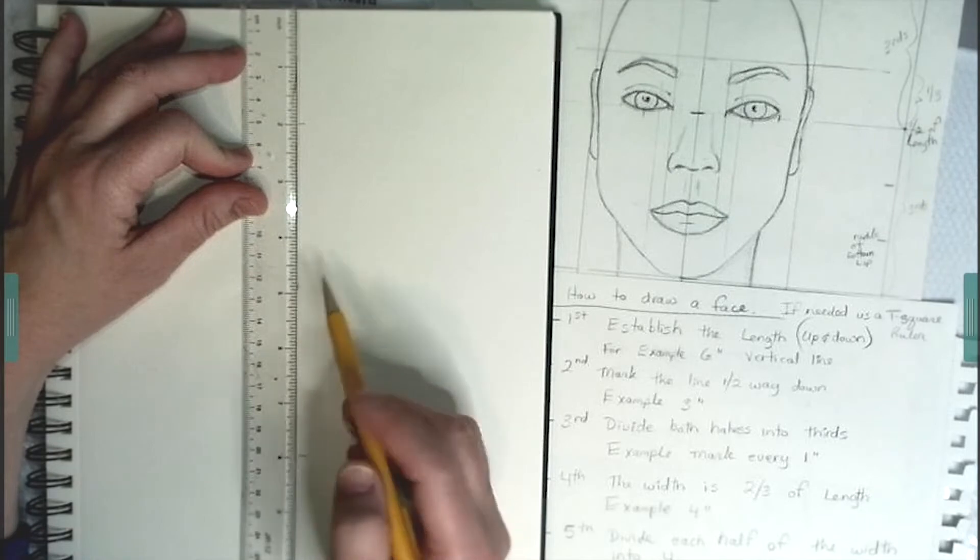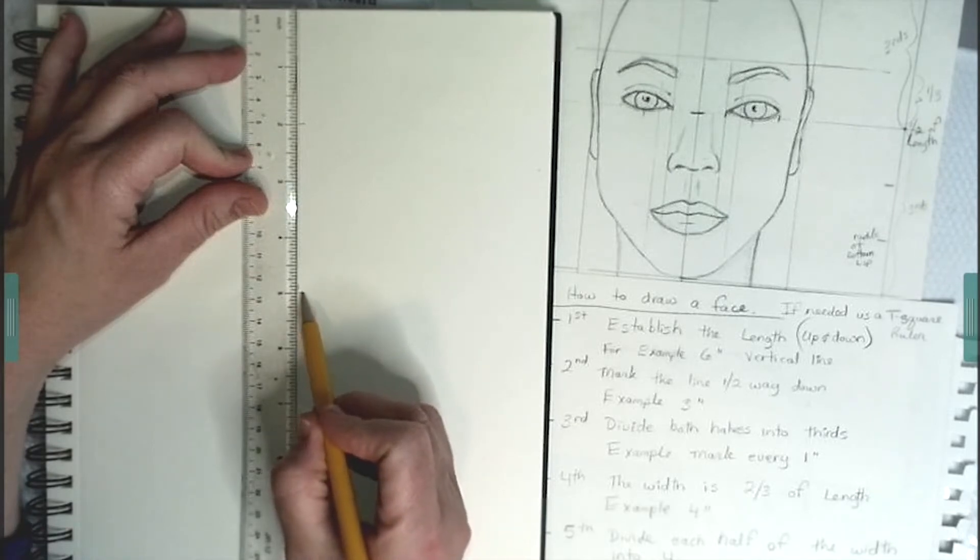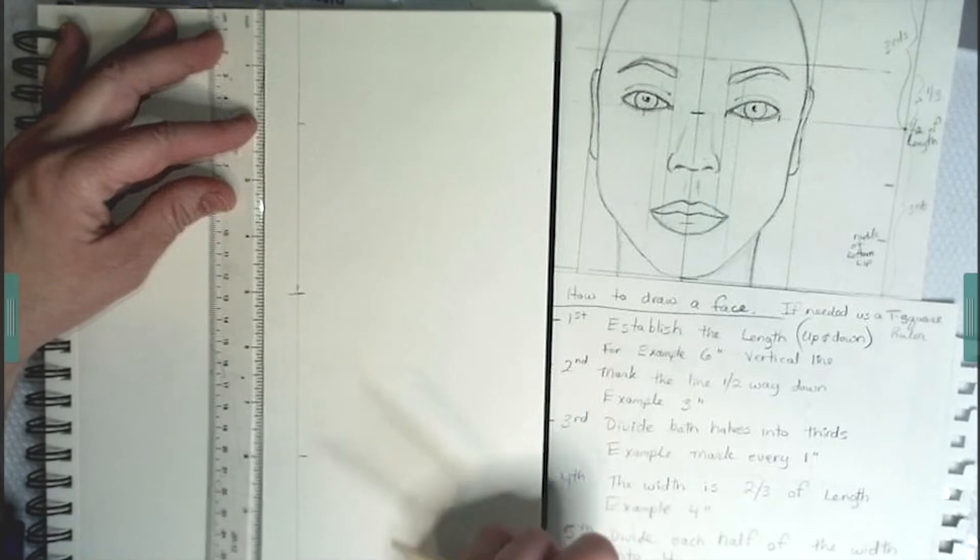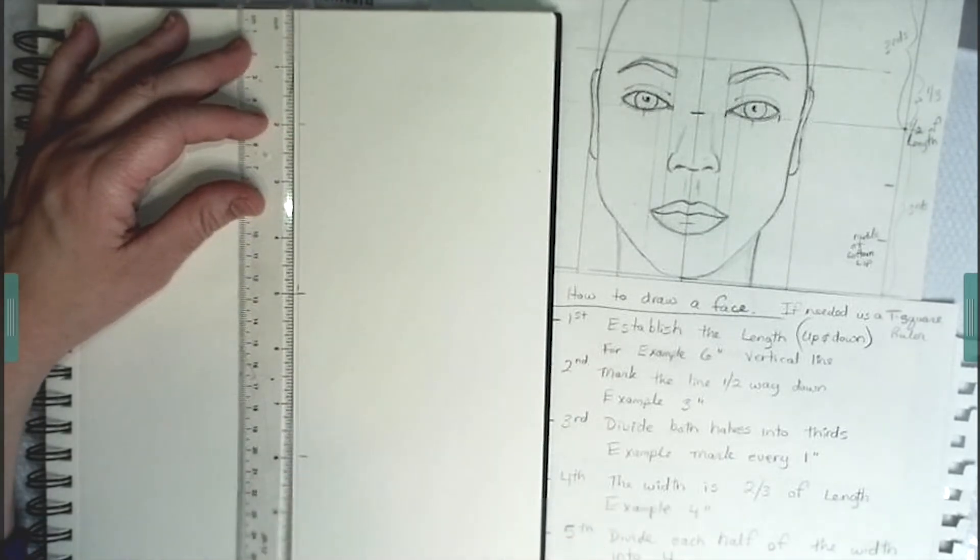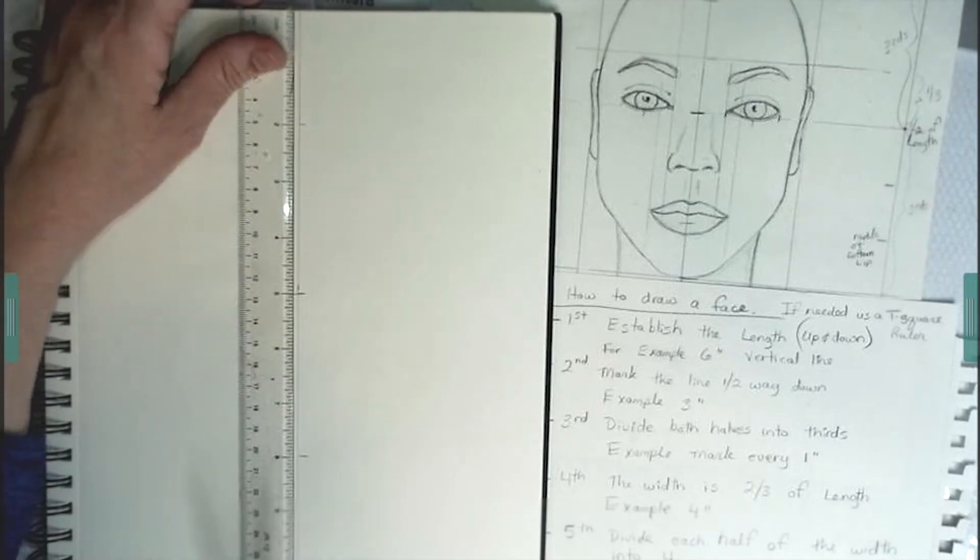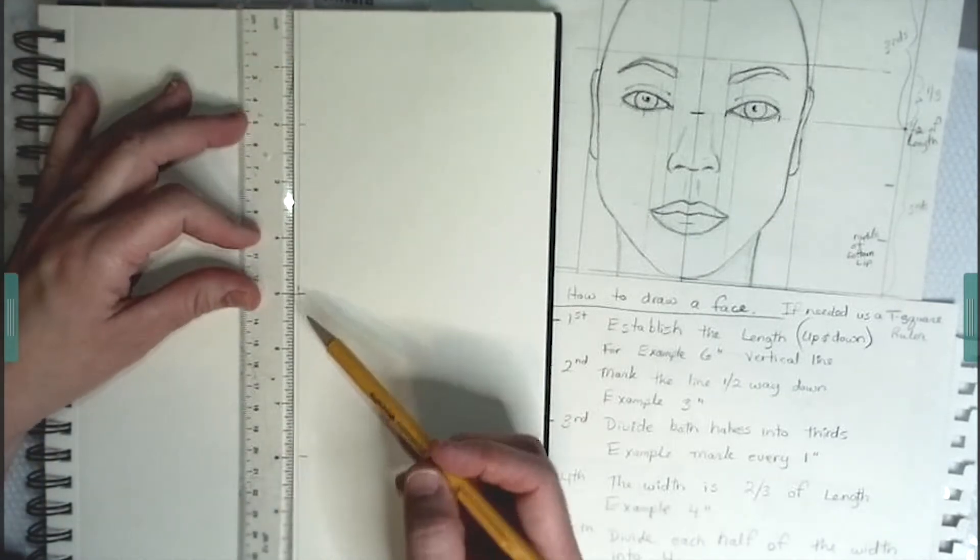Then you want to establish where the middle mark is. So that would be three inches down. Make a mark across vertically and you want to break up each portion of the halves into thirds.